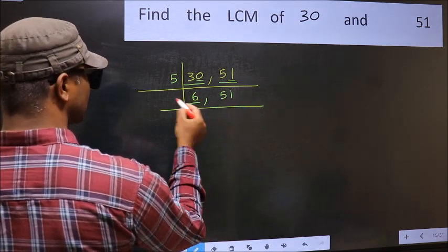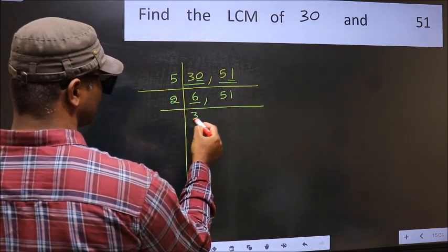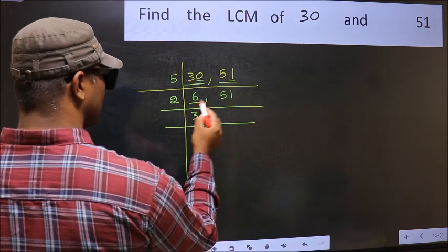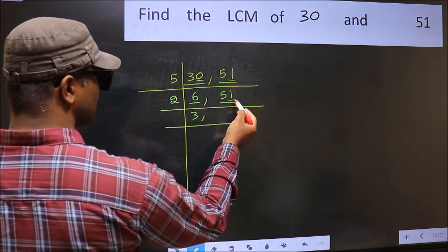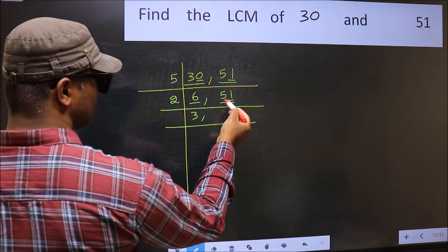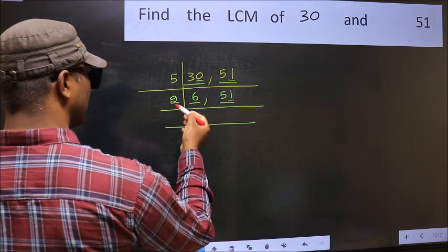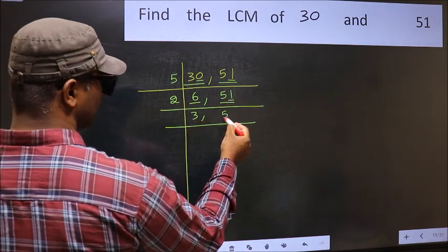Now here we have 6. 6 is 2 times 3 is 6. The other number, 51. Last digit is 1, not even, so this is not divisible by 2. Write it down as it is.